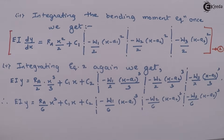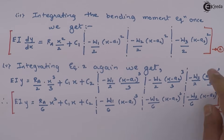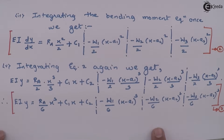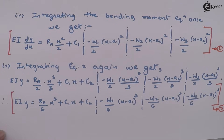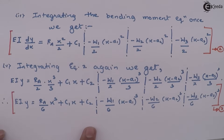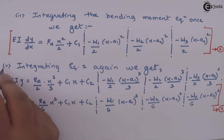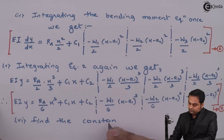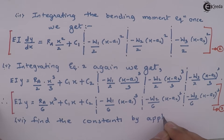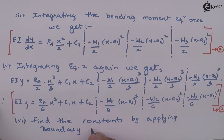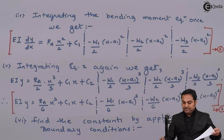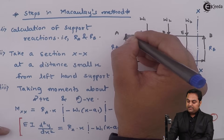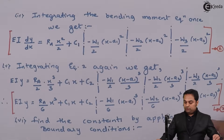Looking at equation two and equation three, in both equations we have constants — equation two has C1 and equation three has C1 and C2. So we need to find these constants. In step six we are going to find the constants by applying boundary conditions. By applying the boundary conditions we find the constants.